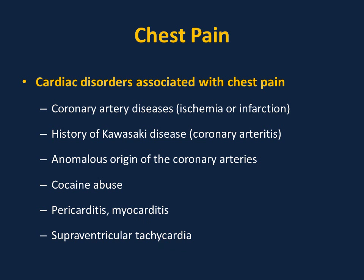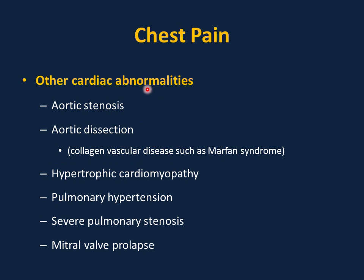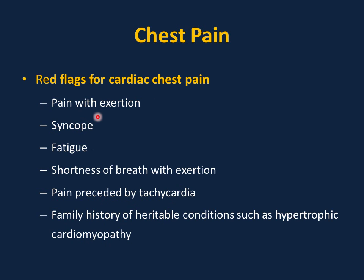Other cardiac causes include pericarditis, myocarditis, and supraventricular tachycardia. Additional cardiac abnormalities associated with chest pain are aortic stenosis, aortic dissection as in Marfan syndrome, hypertrophic cardiomyopathy, pulmonary hypertension, severe pulmonary stenosis, and mitral valve prolapse. Red flags for cardiac chest pain: pain with exertion, syncope during exercise, running, or swimming, abnormal fatigue, poor feeding in babies, shortness of breath with exertion, pain preceded by tachycardia as in SVT, and family history of heritable conditions such as hypertrophic cardiomyopathy.